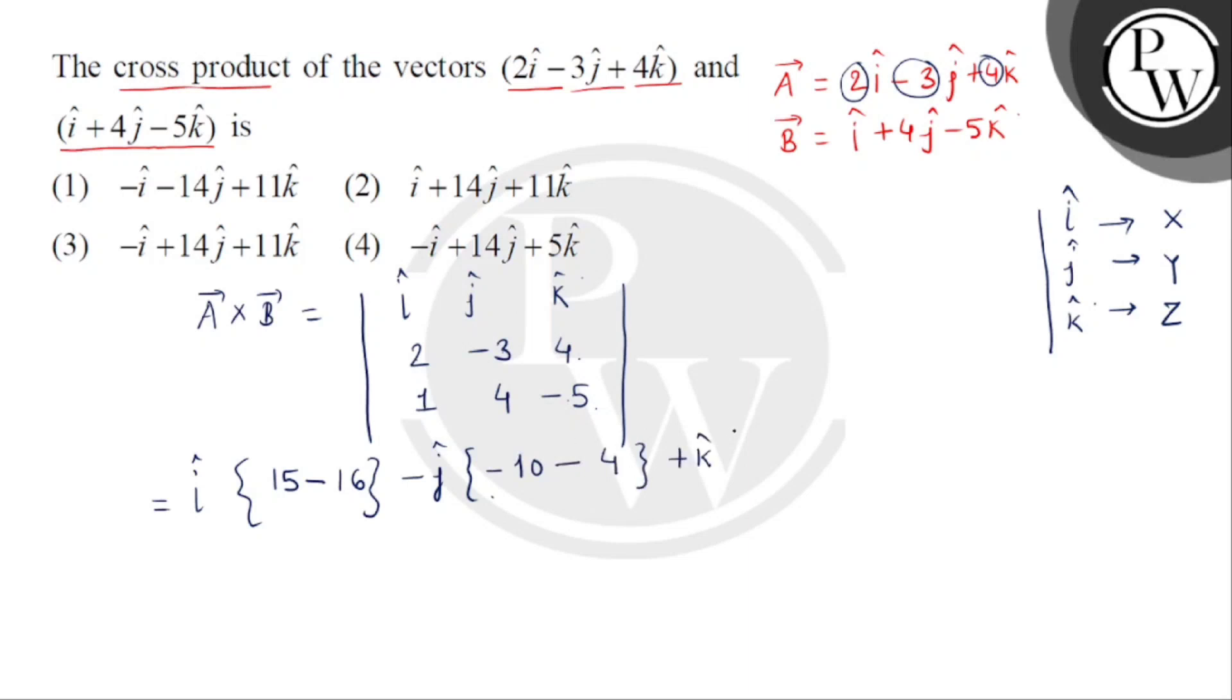Then plus k cap. यहां से हम first row and third column को छोड़ देंगे, तो पहले हमें left to right product मिल जाता है 8. Then minus of minus 3, क्योंकि यह दोनों का product क्या आगया है minus 3. तो यह आजाएगा plus 3.